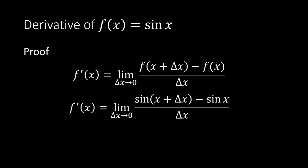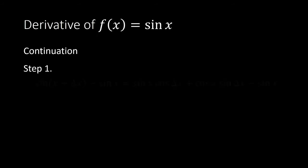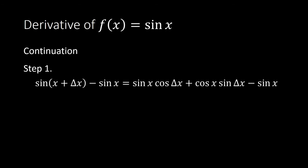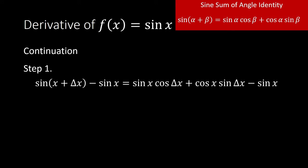Using our limit definition, if f(x) = sin(x), then f'(x) is equal to the limit of [sin(x + Δx) − sin(x)] / Δx as Δx approaches 0. Expanding sin(x + Δx) using the sine sum of angle identity, this becomes: sin(x)cos(Δx) + cos(x)sin(Δx) − sin(x).